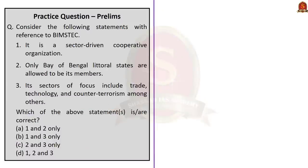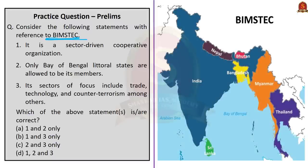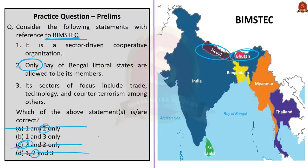Question on BIMSTEC: Statement 1 — it is a sector-driven cooperative organization — is correct. Statement 2 — only Bay of Bengal littoral states are allowed to be its members — is incorrect, because Nepal and Bhutan, which are landlocked, are also members. Statement 3 — its sectors of focus include trade, technology, and counter-terrorism among others — is correct. Correct answer is option B: 1 and 3 only.